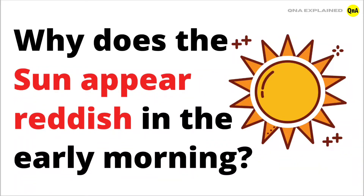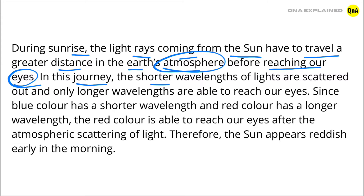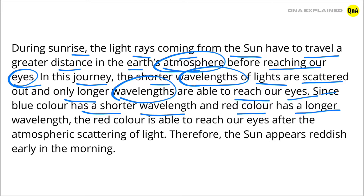Why does the sun appear reddish in the early morning during sunrise? The light rays coming from the sun have to travel a greater distance in the earth's atmosphere before reaching our eyes. In this journey, the shorter wavelengths of light are scattered out and only longer wavelengths are able to reach our eyes. Since blue color has a shorter wavelength and red color has a longer wavelength, the red color is able to reach our eyes after the atmospheric scattering of light. Therefore, the sun appears reddish early in the morning.